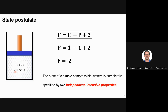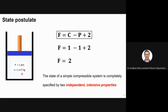A student asks about needing the molar mass to calculate temperature. The answer is that you can use R for that particular gas. Another student asks how the number of components C equals one. The answer is that there is only one gas inside the system. If there were air and water mixed together, C would be two. For now, we just have one gas, so C equals one.